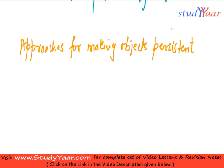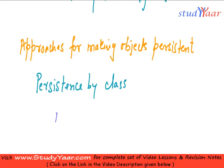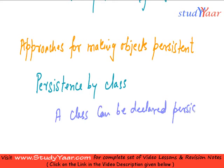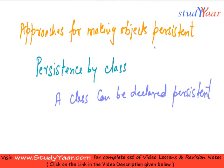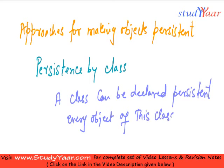So what we can do is we can create objects from a persistent class — persistence by class. In this particular approach, a class can be made persistent, or declared persistent. Every object that is created from this class would by default be a persistent object. So once a class has been declared persistent, every object of this class would be by default persistent.